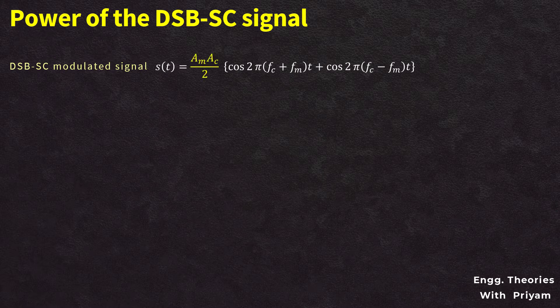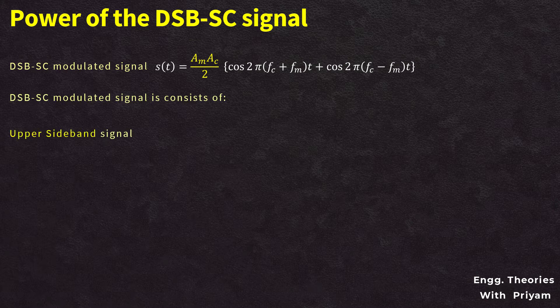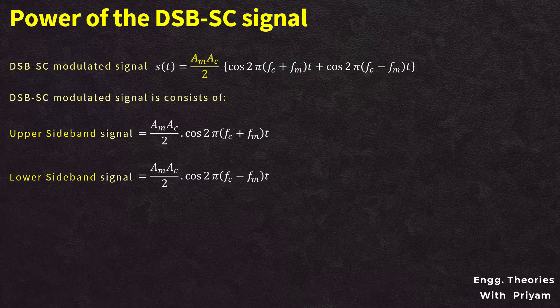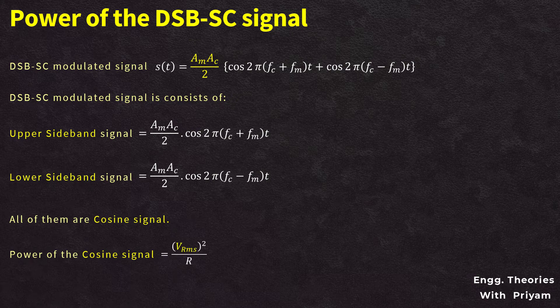Now let us calculate the power of the DSBSC modulated signal. From equation 2, s(t) = (AM·AC/2)·cos(2π(FC + FM)t) + (AM·AC/2)·cos(2π(FC − FM)t). The upper sideband signal has amplitude AM·AC/2 and the lower sideband signal also has amplitude AM·AC/2.